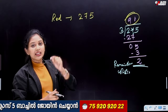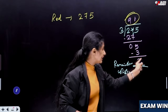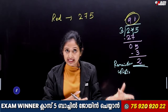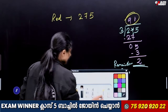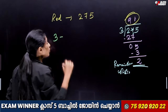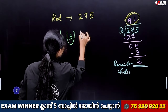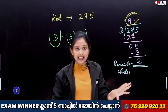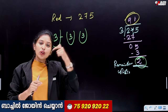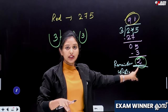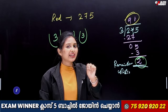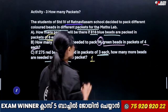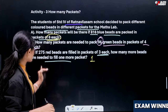275 red beads divided by 3 gives 91 packets with a remainder of 2. We need to fill one more packet. Since one packet holds 3 beads and we already have 2 beads remaining, we need 1 more bead. That's why we say: how many more beads are needed to fill 1 more packet? The answer is 1. 3 minus 2 is 1.